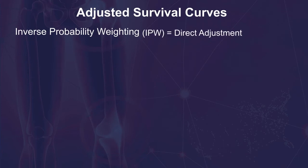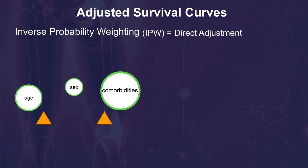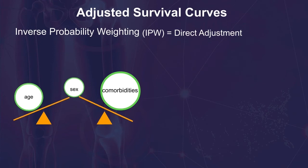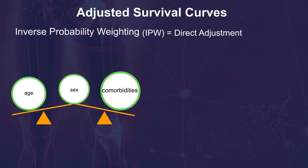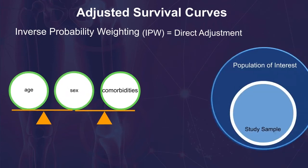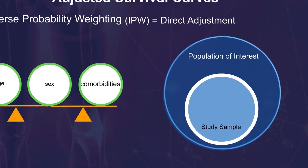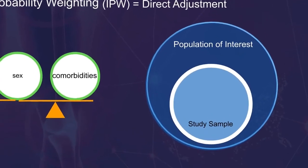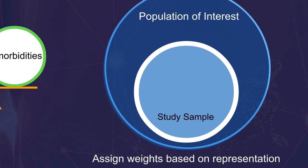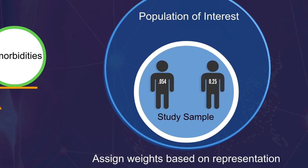Inverse probability weighting, or IPW, is a direct adjustment method that generates a pseudo-sample in which the imbalanced confounders become balanced between the comparison groups. Each patient in the study population gets a weight, such that those who are over-represented are assigned a lower weight, and those who are under-represented are assigned a larger weight.